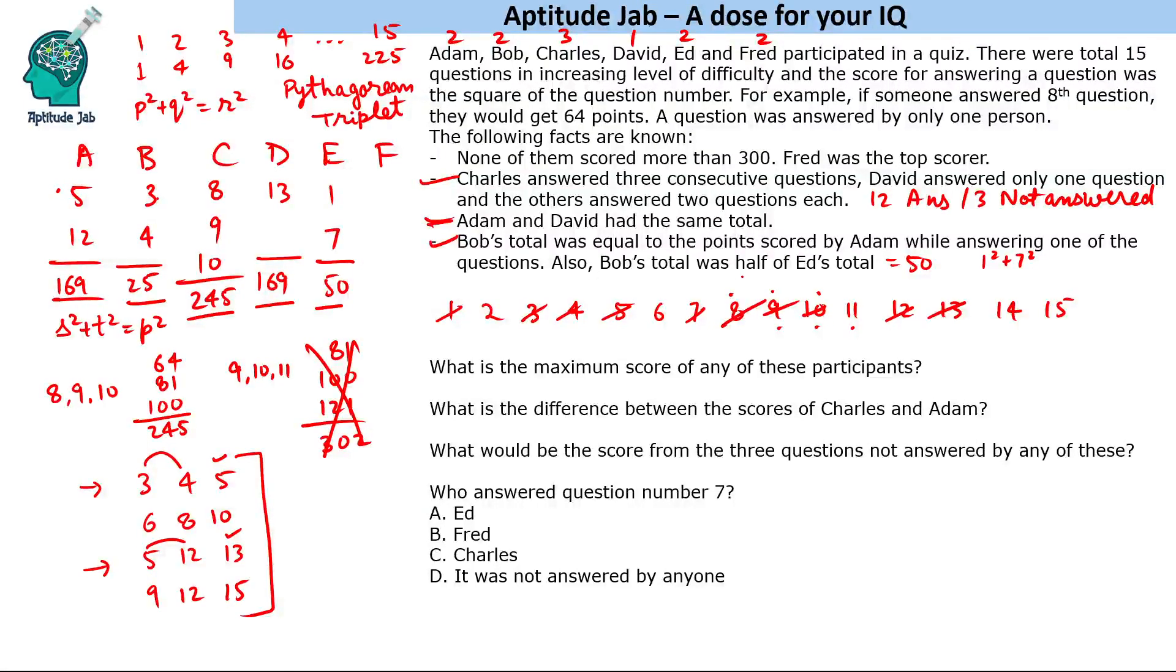The remaining person is Fred. Fred answered two questions and was the top scorer. Fred could not have answered question 2 because 2² + 15² gives 4 + 225 = 229, which is less than 245. If you take 6 and 15...